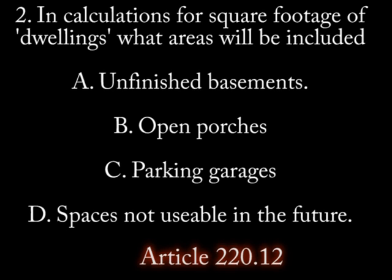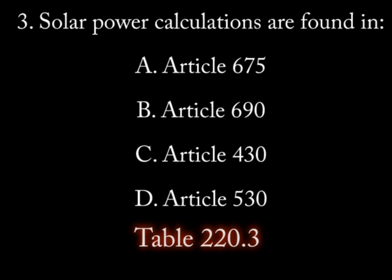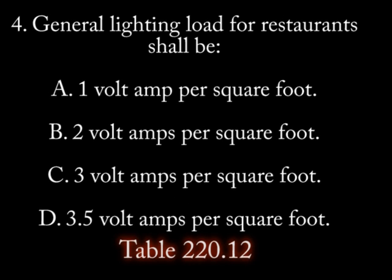Question 3: Solar power system calculations can be found in: a) Article 675, b) Article 690, c) Article 430, d) Article 530. Question 4: The general lighting load for restaurants will be: a) 1 volt amp per square foot, b) 2 volt amps per square foot, c) 3 volt amps per square foot, d) 3.5 volt amps per square foot.